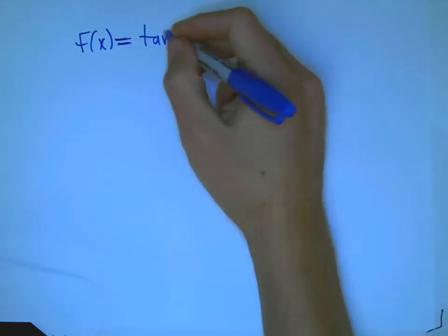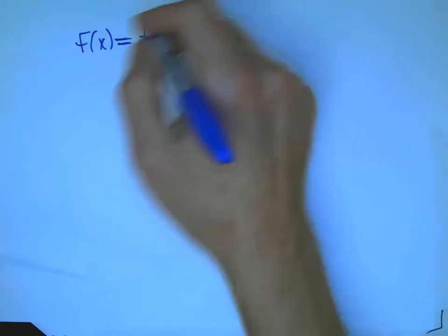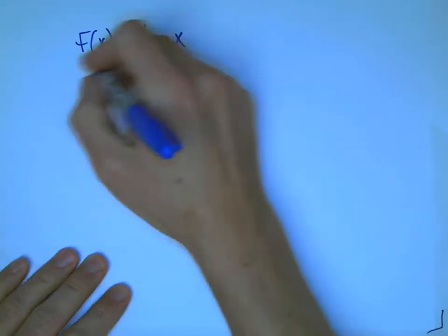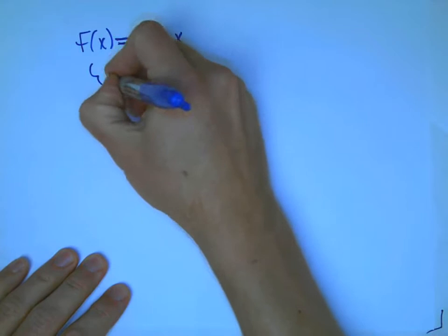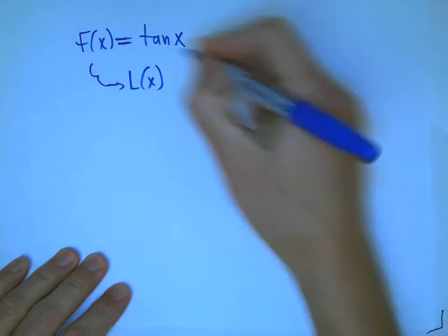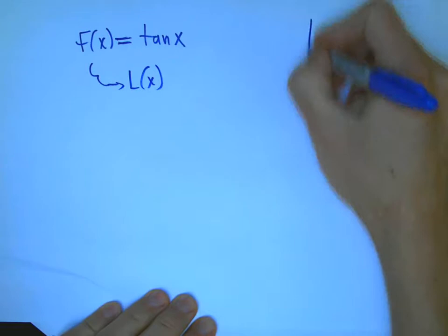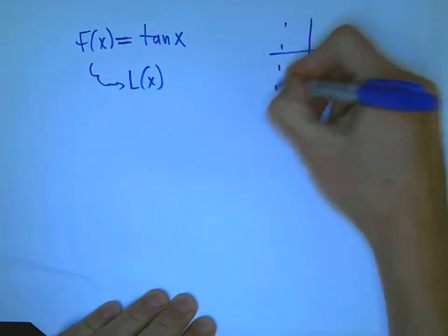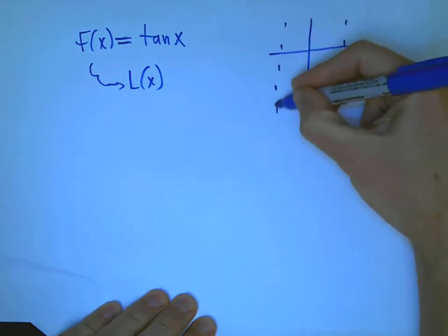So, remember the procedure. We're going to try and replace this with its linear approximation. And we need to say where we're going to approximate it. Well, that's sort of our choice. It depends on exactly what kinds of values we want. We're going to pick the simplest point, which is a equals 0.